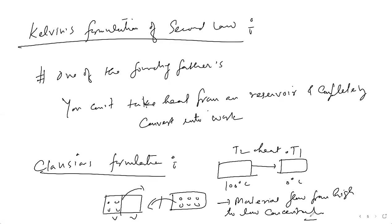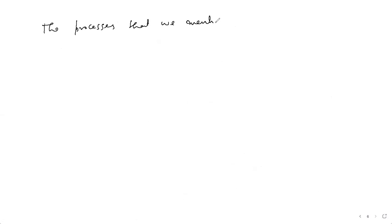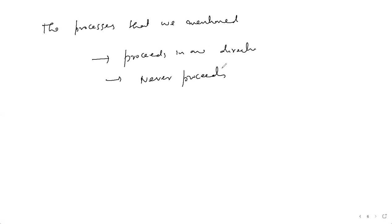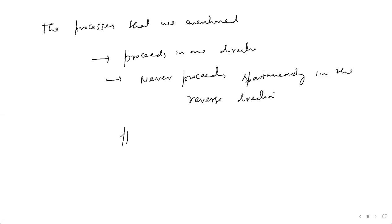You notice there are at least two processes mentioned that proceed in one direction. These processes have two properties: number one, they proceed in one direction; and number two, they never proceed spontaneously in the reverse direction. At the time, it was not very clear that all these processes are directed by a common law of nature — so what was that common law, and why is this happening?